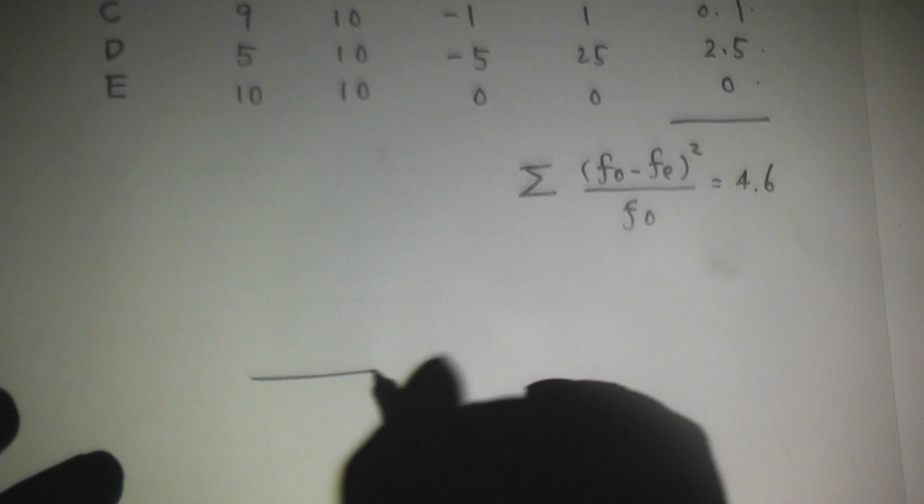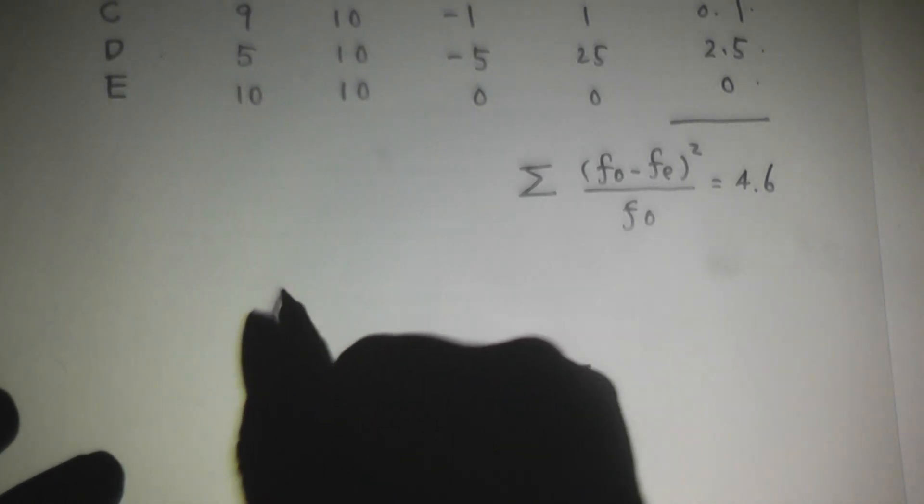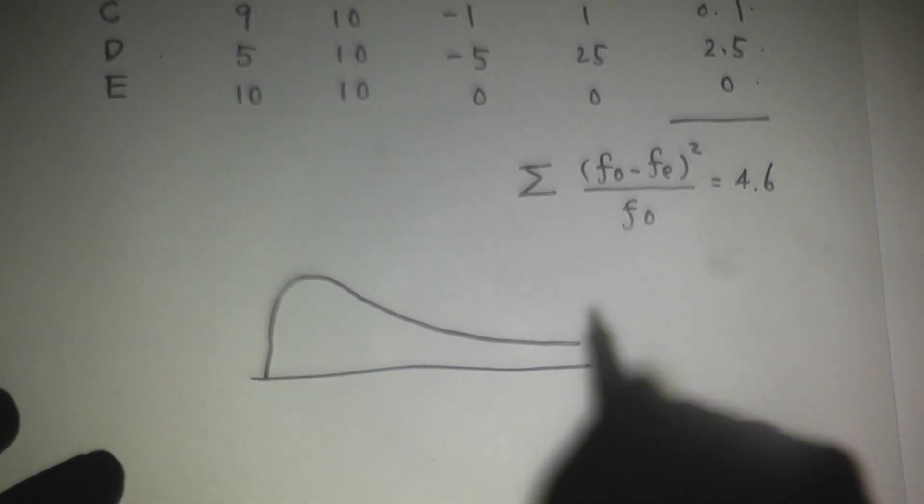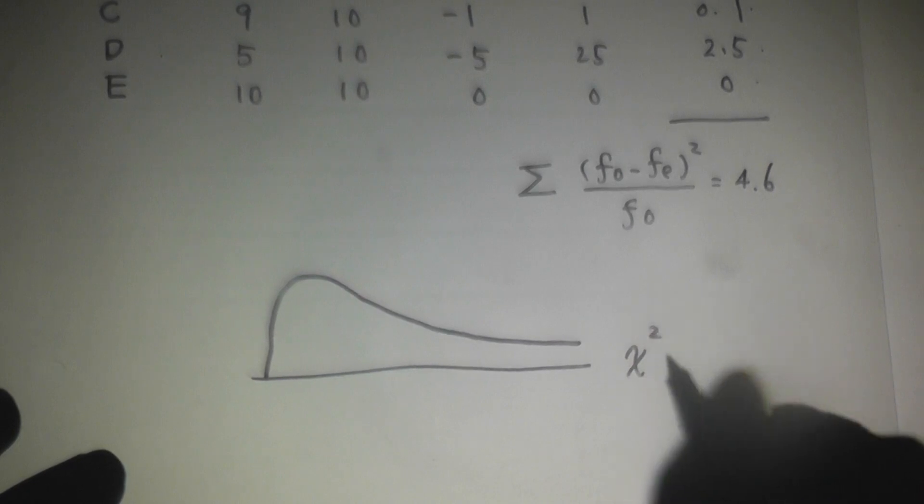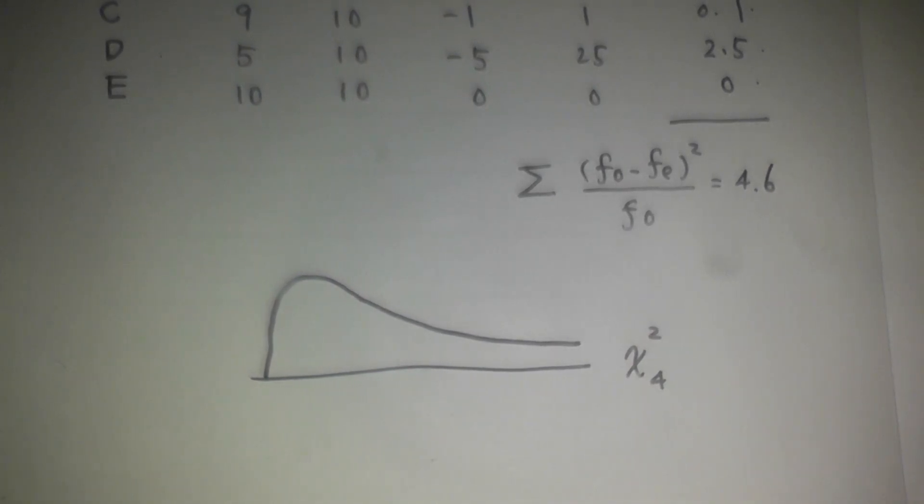Let's check the chi-squared table. This is chi-squared table. This is chi-squared with four degrees of freedom. If you check the chi-squared table with four degrees of freedom, when degree of freedom is equal to 4.